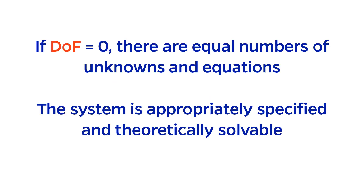If degrees of freedom equals zero, the number of equations equals the number of unknowns. This means that the system is appropriately specified. A unique solution exists, and you can theoretically solve the problem.